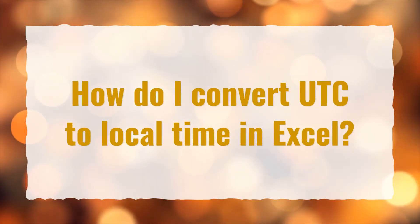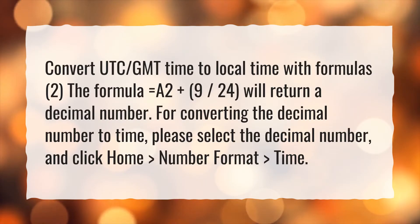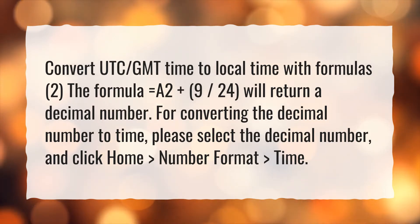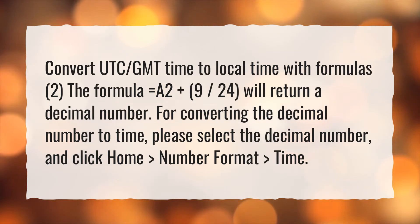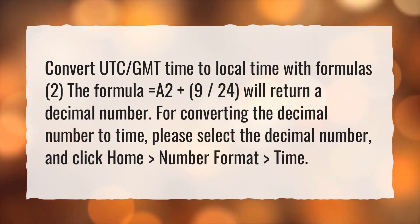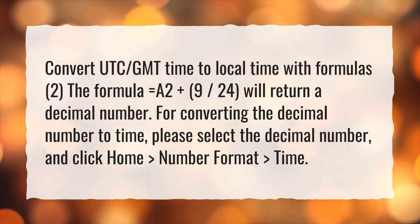How do I convert UTC to local time in Excel? Convert UTC/GMT time to local time with formulas. The formula =A2+(9/24) will return a decimal number. For converting the decimal number to time, please select the decimal number and click Home > Number Format > Time.